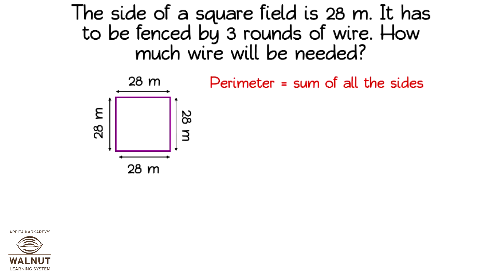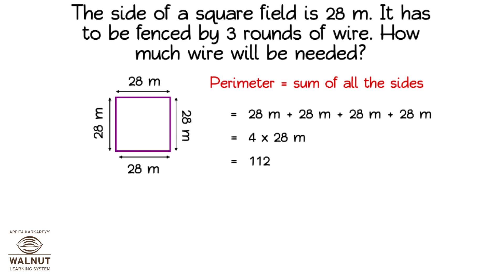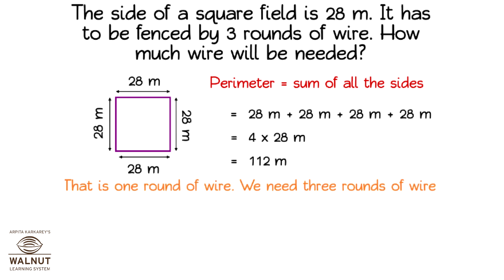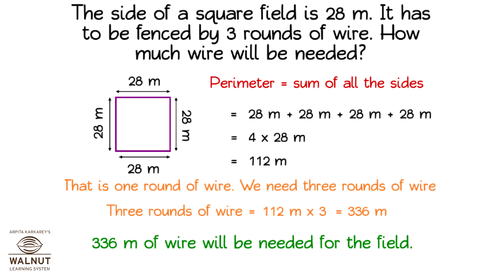Perimeter is equal to sum of all the sides, equal to 28 meters plus 28 meters plus 28 meters plus 28 meters, which is equal to 4 into 28 meters, which is equal to 112 meters. That is one round of wire. We need 3 rounds of wire. 3 rounds of wire is equal to 112 meters into 3, which is equal to 336 meters. 336 meters of wire will be needed for the field.